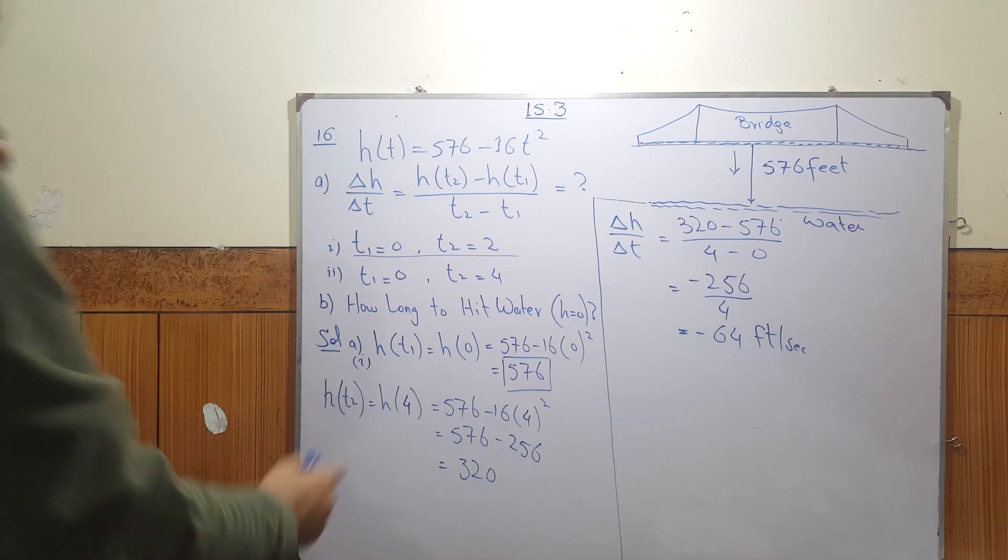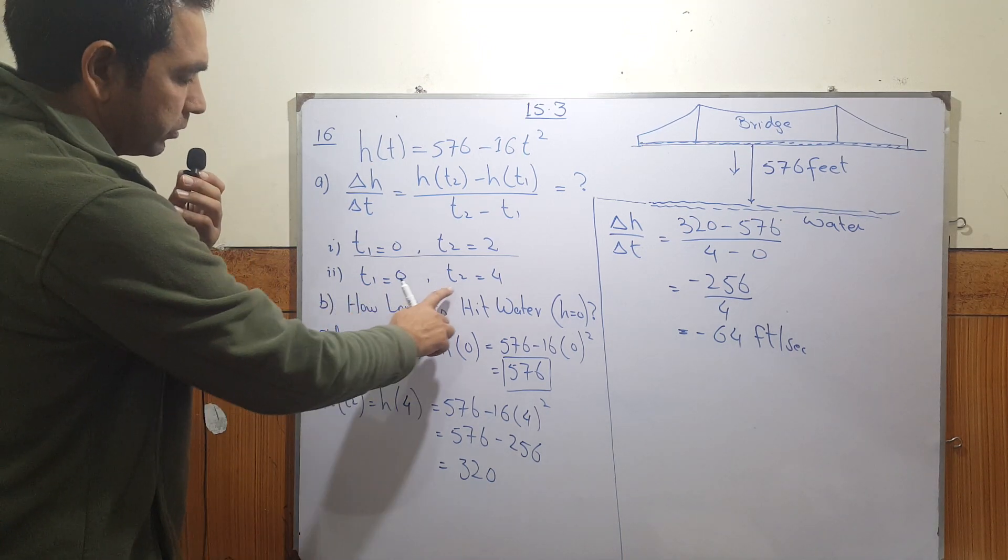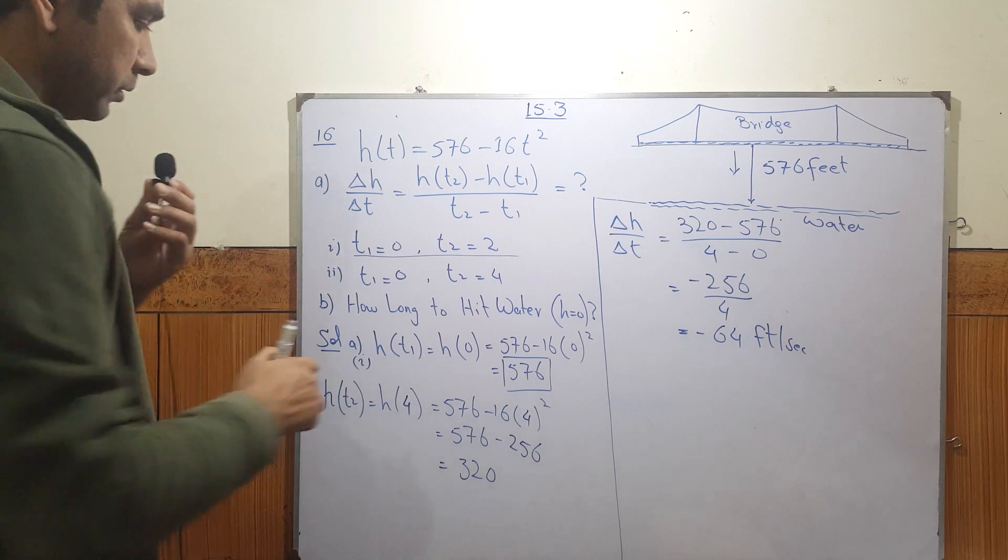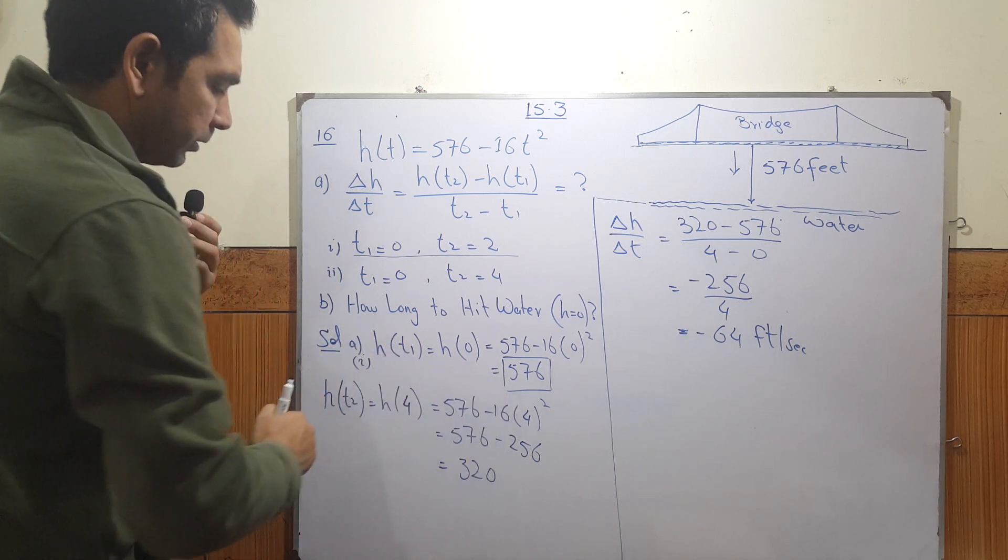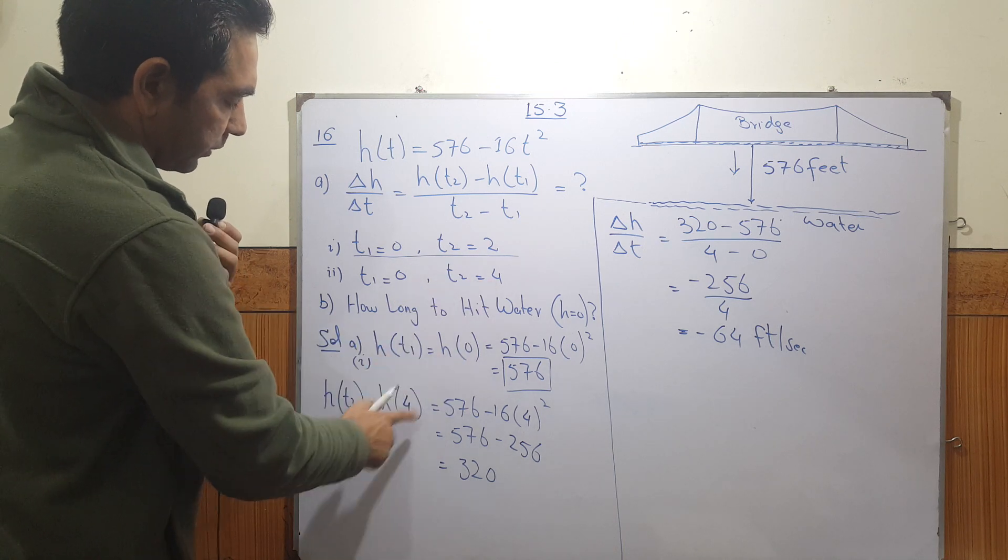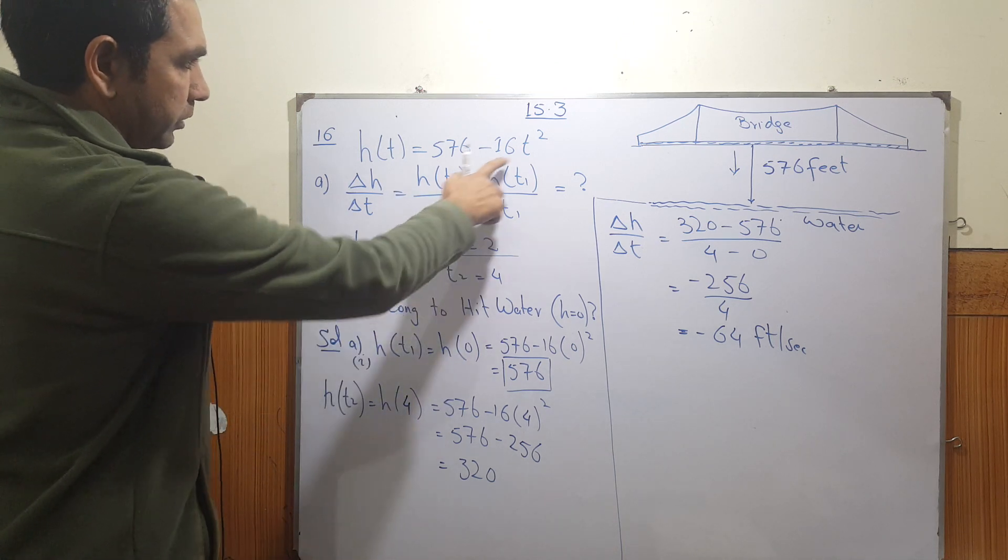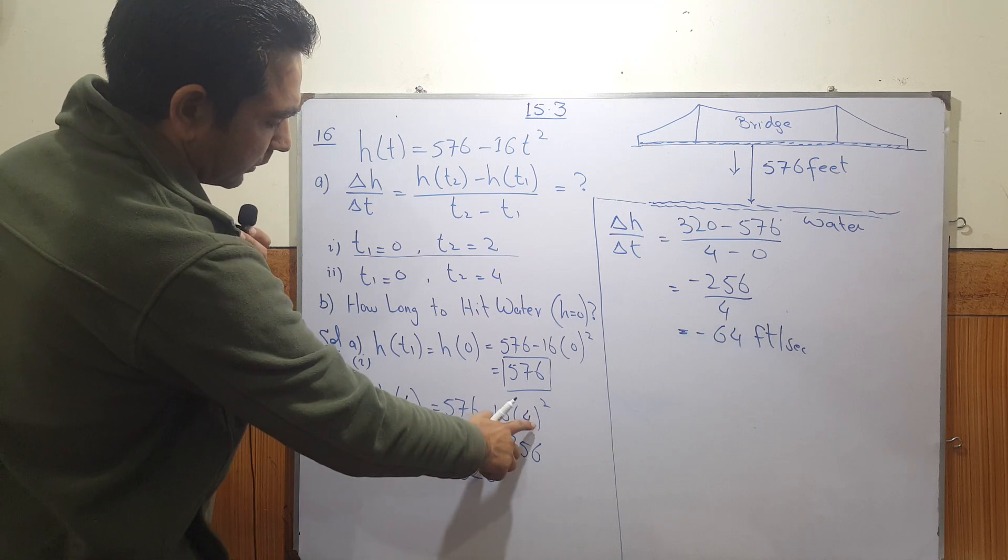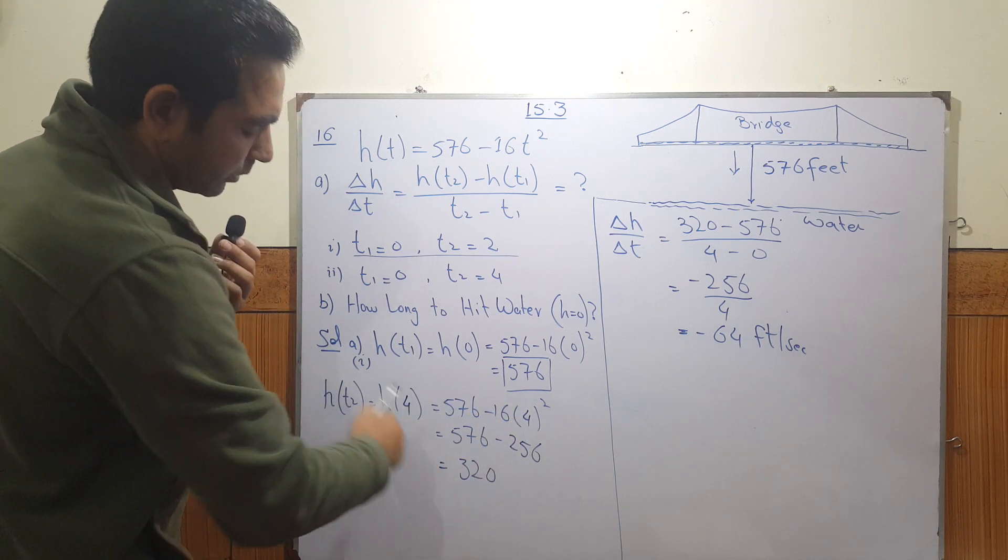Now similarly for the second part, we have T1 equals zero and T2 equals four. So T1 would be exactly the same. For T2 we have to replace the T value by four. So replace T by four and calculate this, which gives us 320.